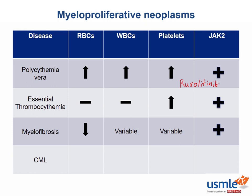Last of all, we have CML. Here we'll see an increase in the white blood cells as well as the platelets, but a decrease in the red blood cells. And remember, this is the Philadelphia chromosome positive, or the 9;22 translocation.